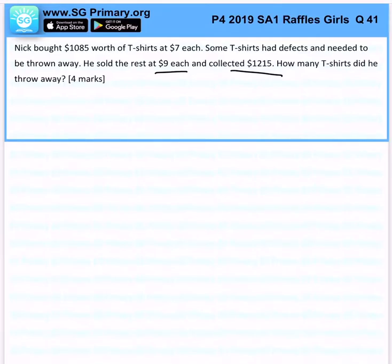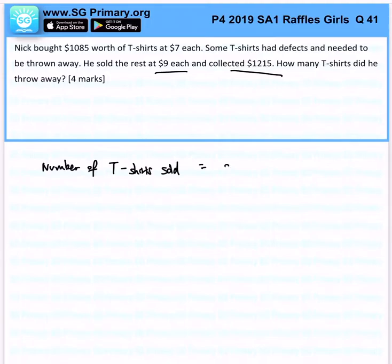First, we find out how many t-shirts he sold. Write: number of t-shirts sold. That is $1,215 divided by $9, which equals 135 t-shirts.